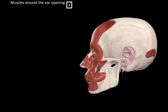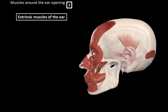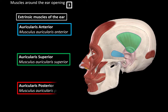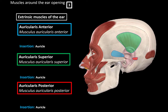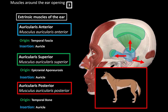Finally, the muscles around the ear opening — three muscles called the extrinsic muscles of the external ear. These are the auricularis anterior, auricularis superior, and auricularis posterior. All insert on the root of the auricle. The auricularis anterior originates from the temporal fascia, the auricularis superior from the epicranial aponeurosis, and the auricularis posterior from the temporal bone. Their common function is movement of the auricle in each direction. They have no practical importance in humans but are more developed in animals dependent on hearing, like dogs that can move their ears around.